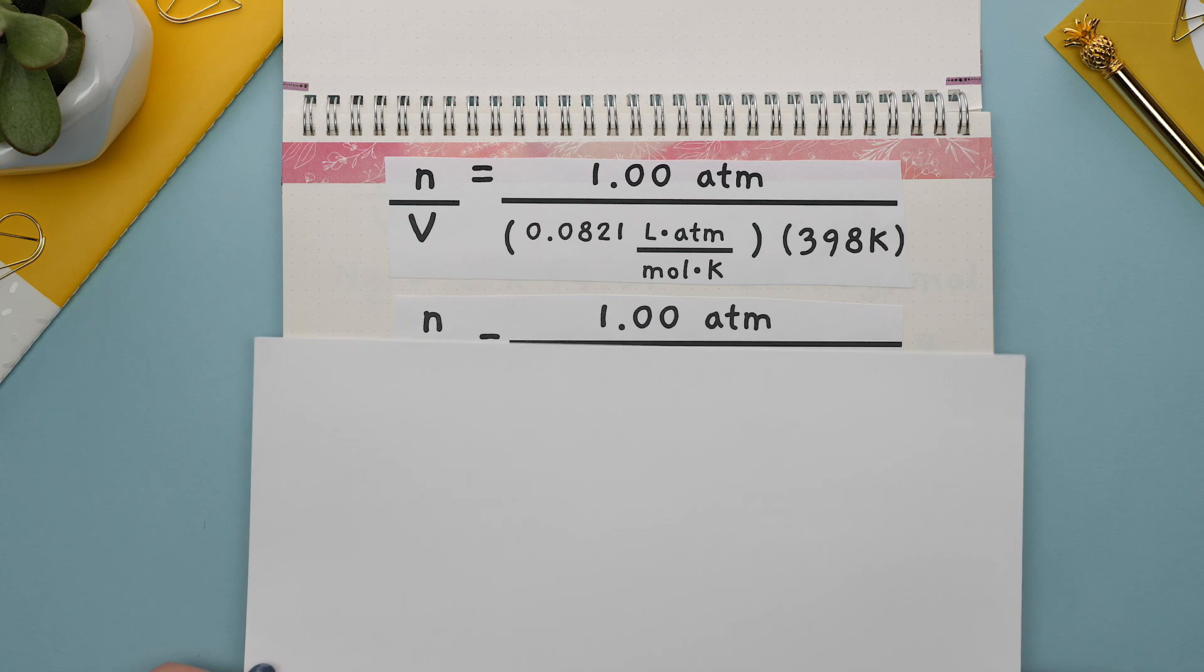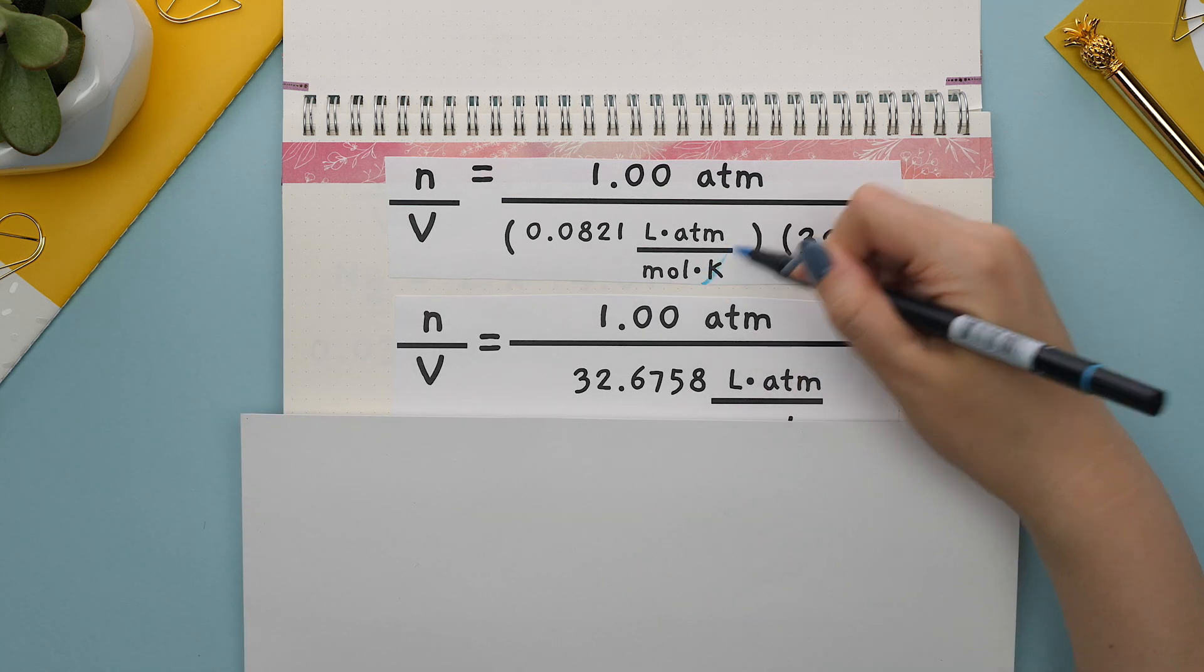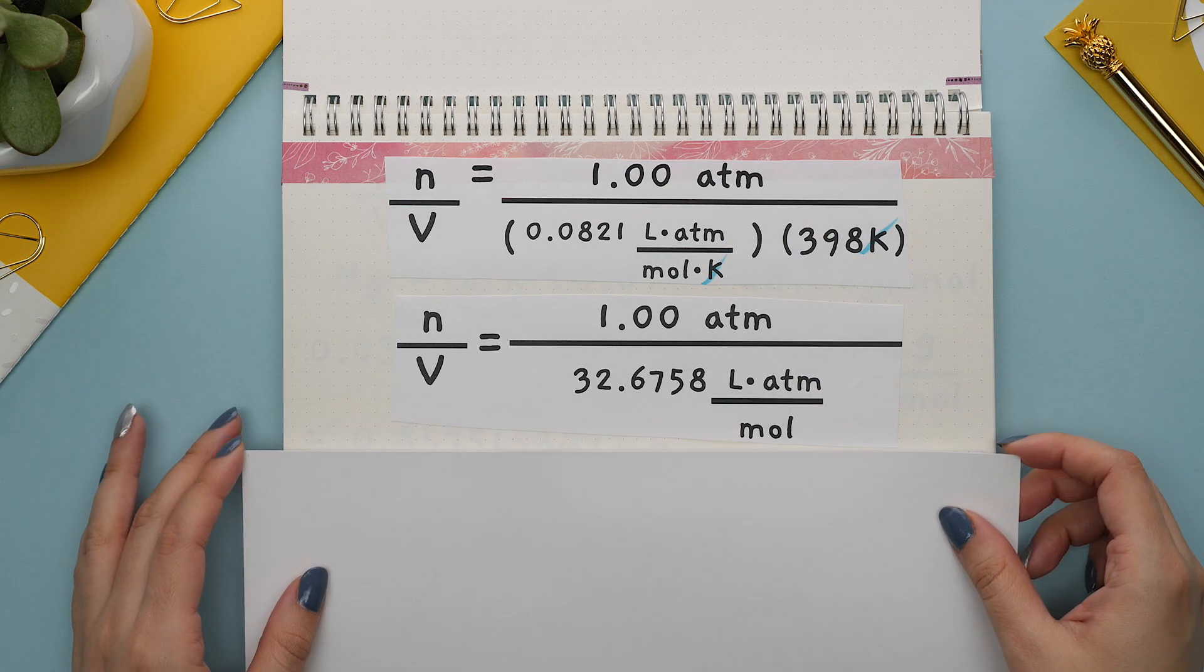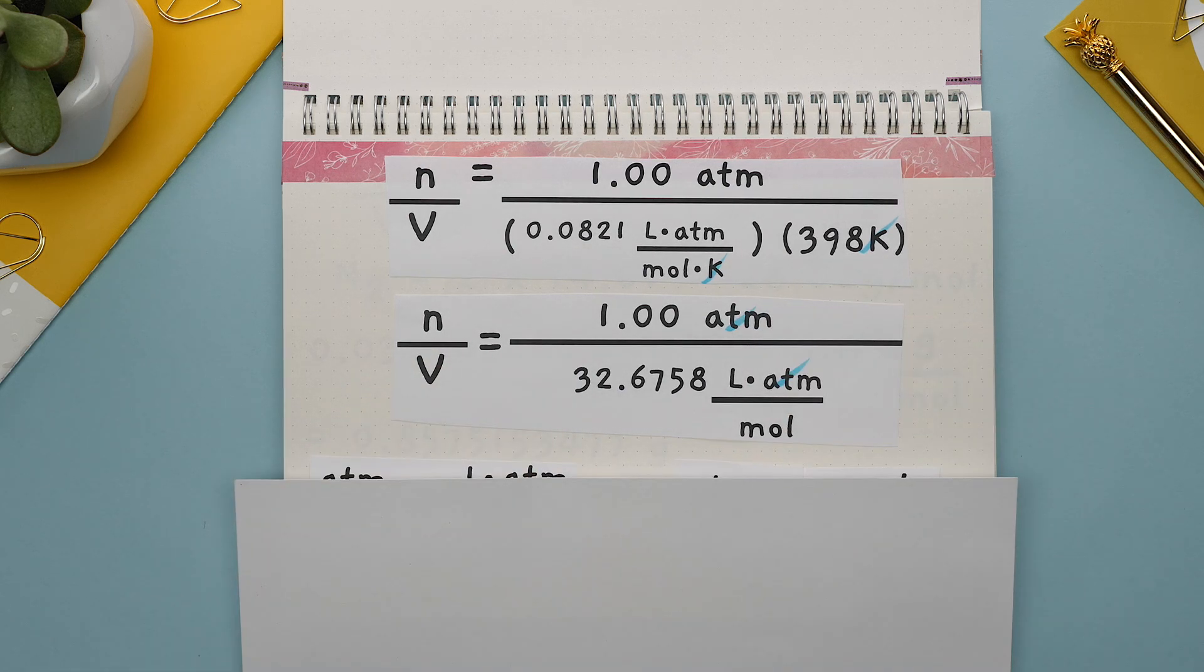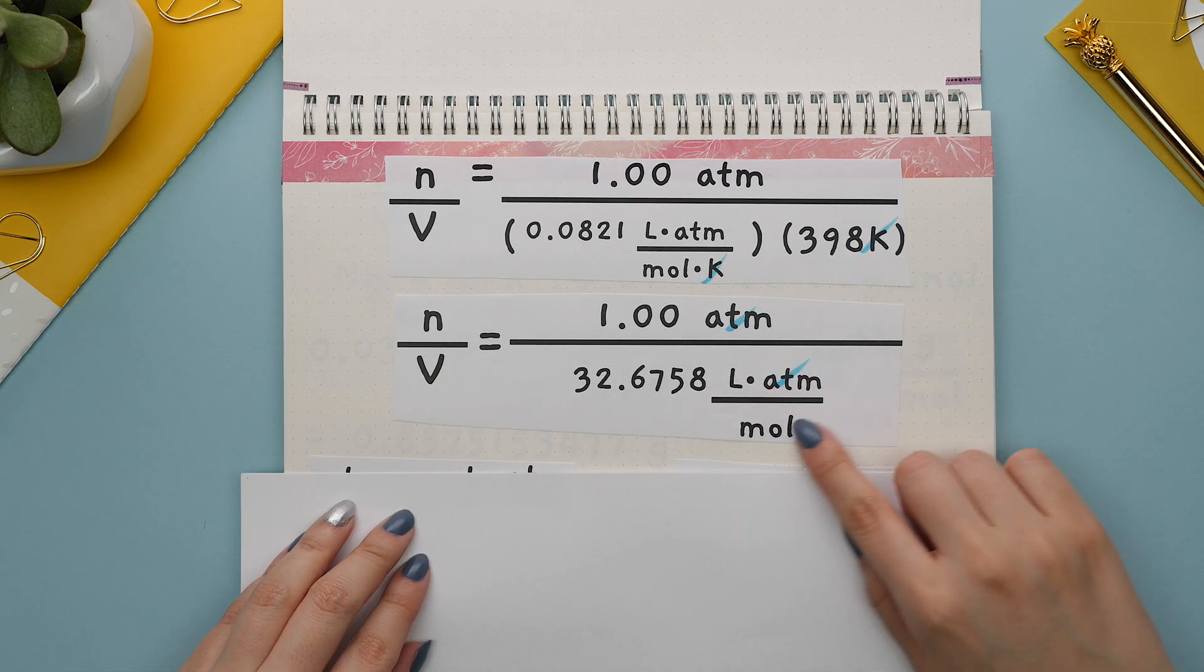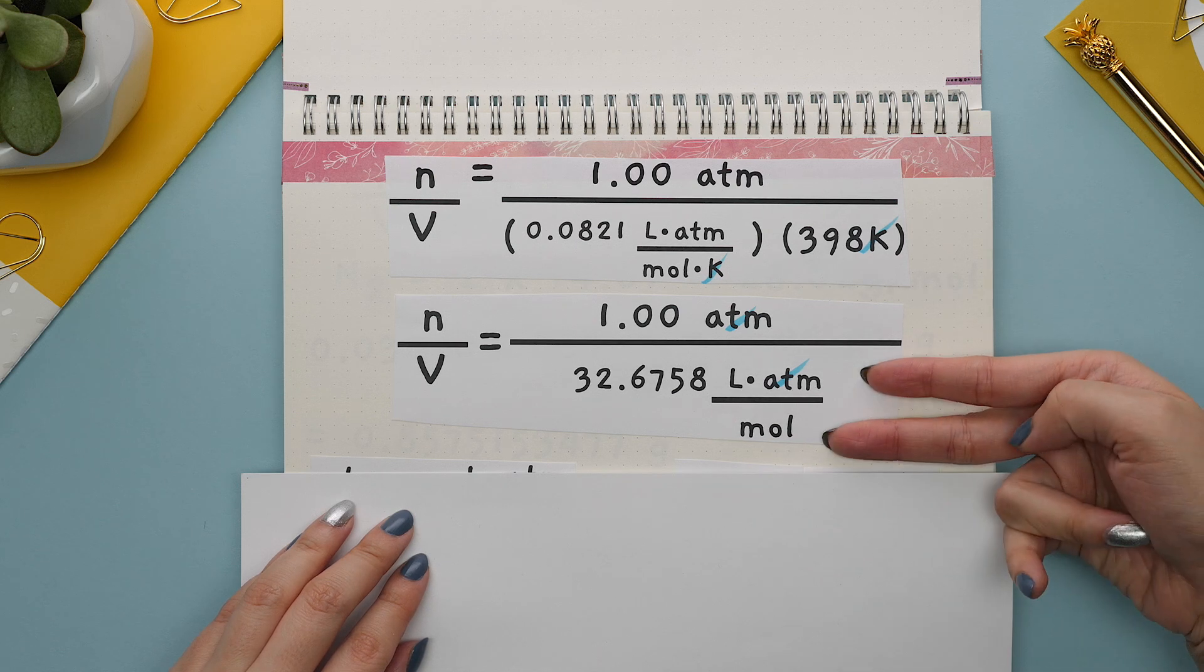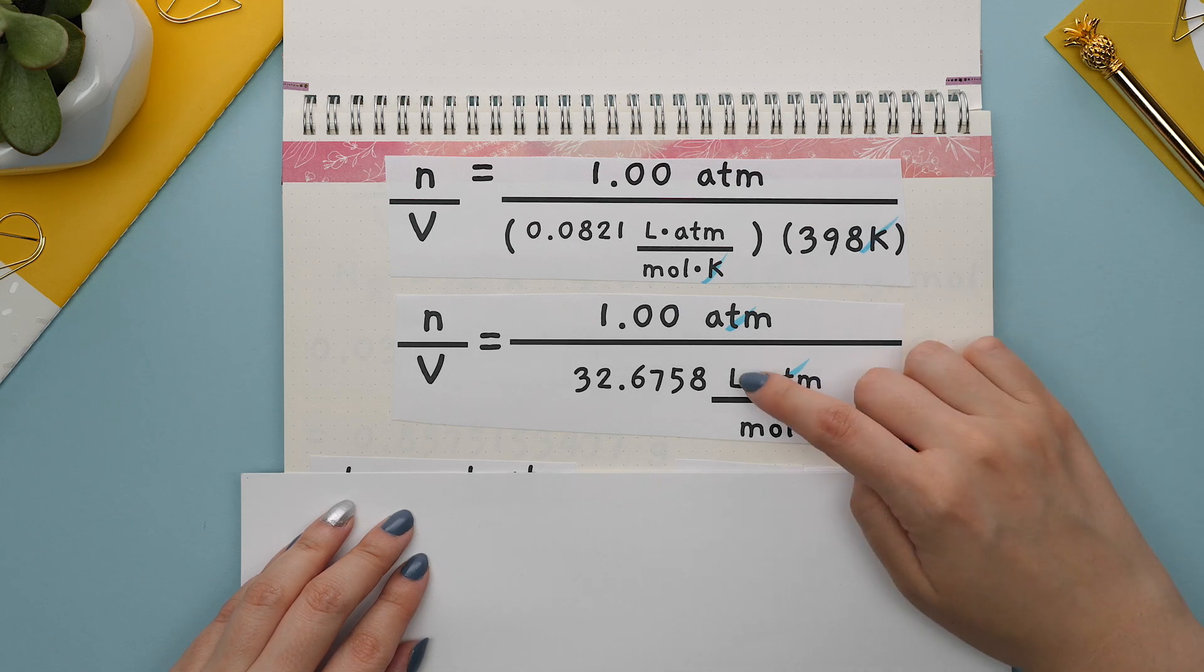Multiply these two values. These units cancel out and we are left with this new fraction. Now we will divide and these units cancel out. Since this is on the denominator, our units would flip to the reciprocal and be moles divided by liters.